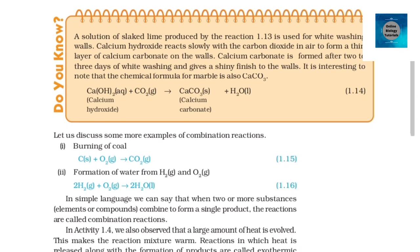Do you know? A solution of slaked lime produced by reaction 1.13 is used for whitewashing walls. Ca(OH)₂ reacts slowly with the carbon dioxide in air to form a thin layer of calcium carbonate on the walls. Calcium carbonate is formed after 2 to 3 days of whitewashing and gives a shiny finish to the walls. It is interesting to note that the chemical formula for marble is also CaCO₃. Ca(OH)₂(aq) + CO₂(g) → CaCO₃(s) + H₂O(l). Let us discuss some more examples of combination reactions: 1. Burning of coal: C(s) + O₂(g) → CO₂(g). 2. Formation of water from H₂ gas and O₂ gas: 2H₂(g) + O₂(g) → 2H₂O(l). When two or more substances combine to form a single product, the reactions are called combination reactions. Reactions in which heat is released along with the formation of products are called exothermic chemical reactions.